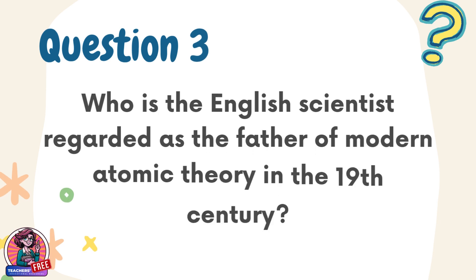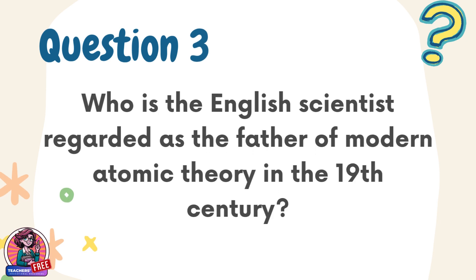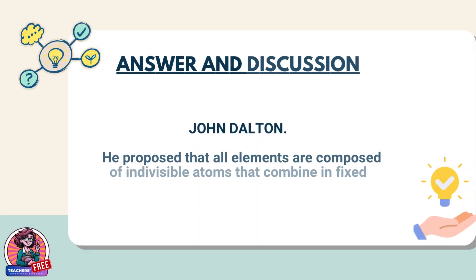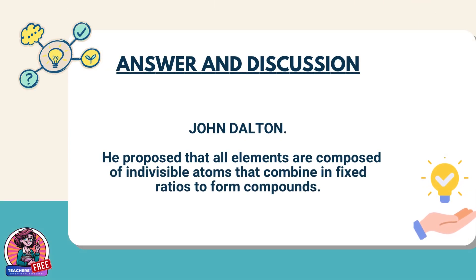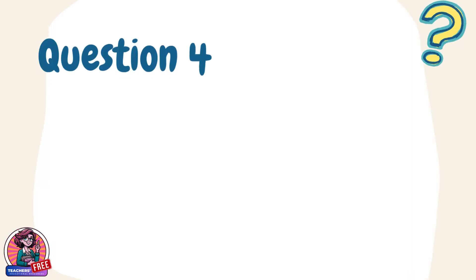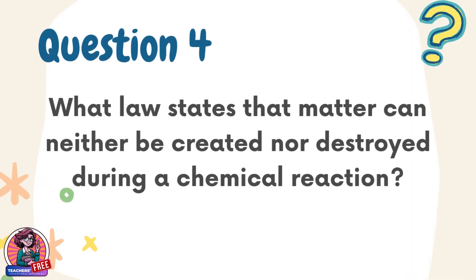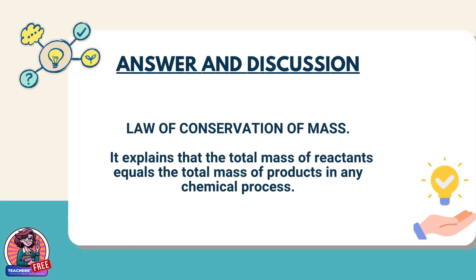Question 3. Who is the English scientist regarded as the father of modern atomic theory in the 19th century? Answer: John Dalton. He proposed that all elements are composed of indivisible atoms that combine in fixed ratios to form compounds. Question 4. What law states that matter can neither be created nor destroyed during a chemical reaction? Answer: Law of conservation of mass. It explains that the total mass of reactants equals the total mass of products in any chemical process.